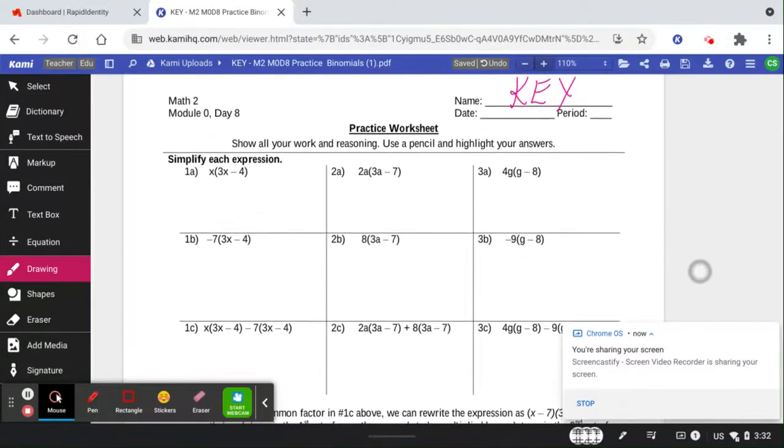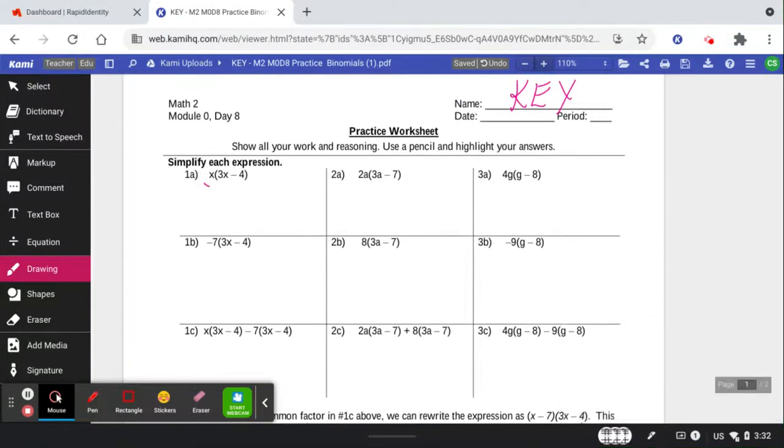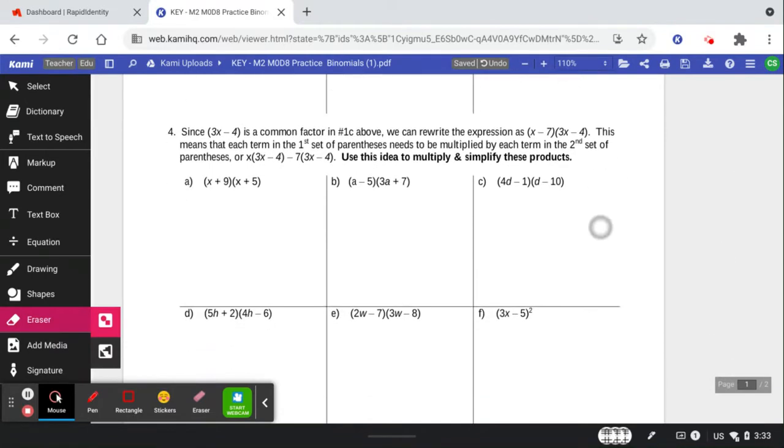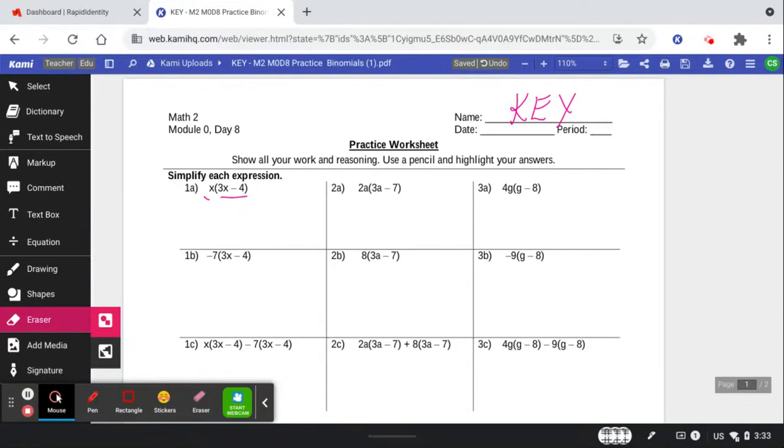Okay, the top section of this is just multiplying a monomial times a binomial, and then there's some here where you're doing the same thing and then combining like terms. But then on the bottom section it's going to be the new stuff. This is where we're multiplying the two binomials. You're going to choose if you want to do the FOIL method or if you want to do the BOX method. We'll get there in just a second. So let's go do these simpler ones first, see how you do.